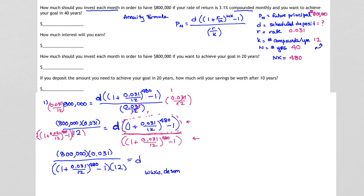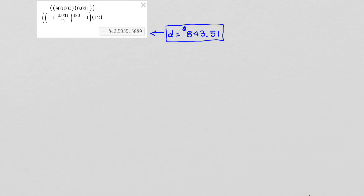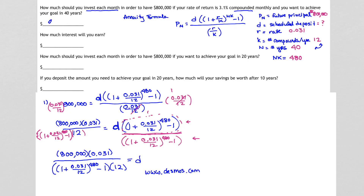Heading to decimals.com to calculate. After inputting the formula, I get 800,000 times 0.031 divided by that entire quantity, which equals $843.505... Rounding up, our answer for D — the amount we deposit each month — is $843.51. That completes part one.